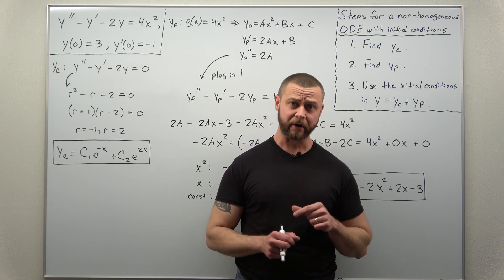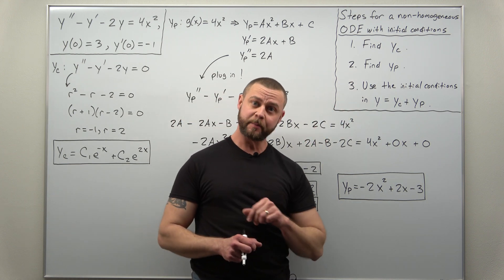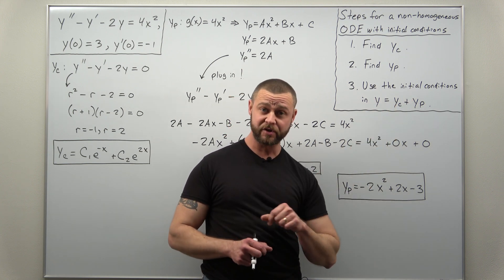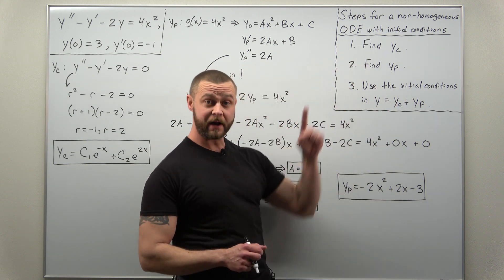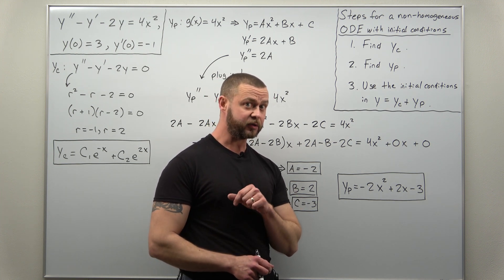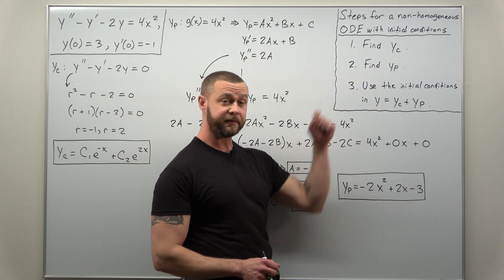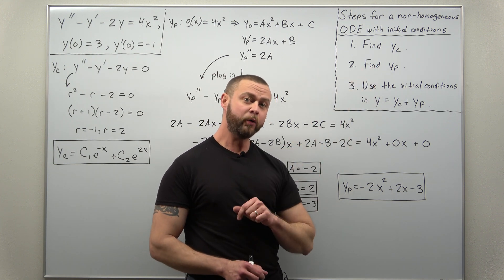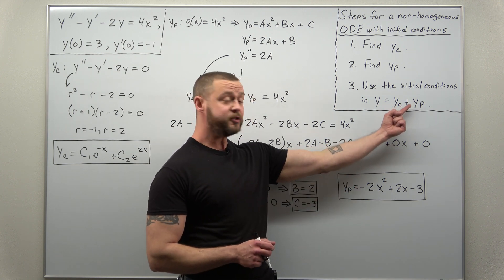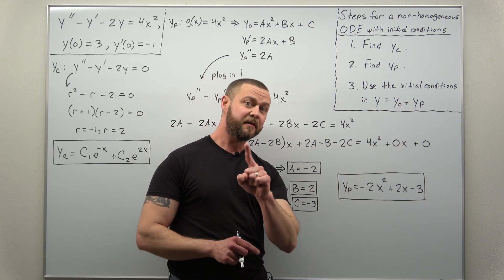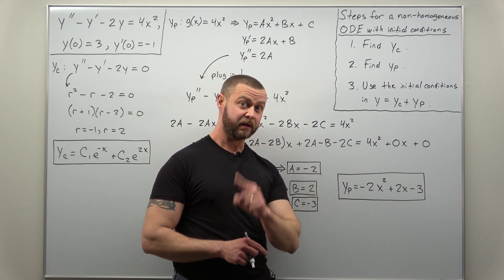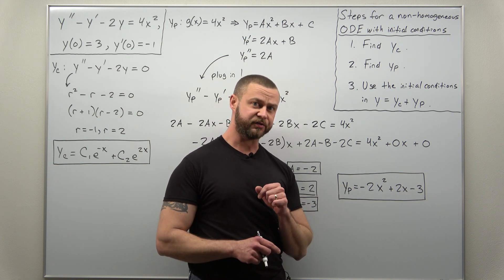So before we get started, I want to just outline the three simple steps that we're going to follow. The only real new one we're going to add is using the initial conditions at the end. Step one is still to find the complementary solution. Step two, using undetermined coefficients, we're going to find the particular solution. And the only new part compared to the previous problems we looked at is we're going to use the initial conditions in the full solution, which is YC plus YP, the complementary solution plus the particular solution.